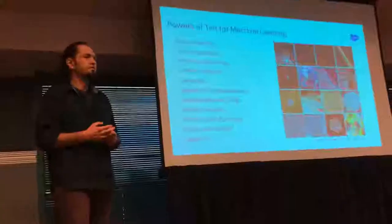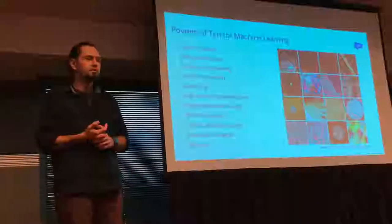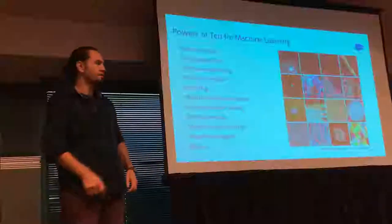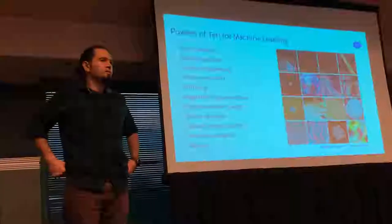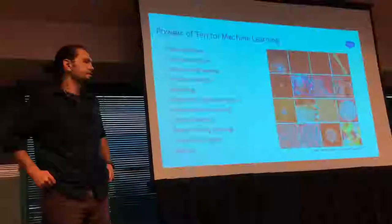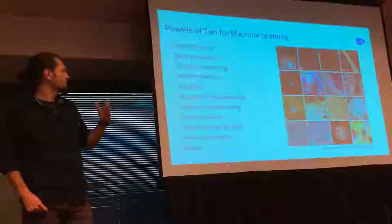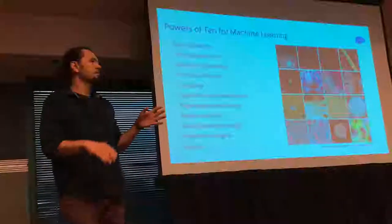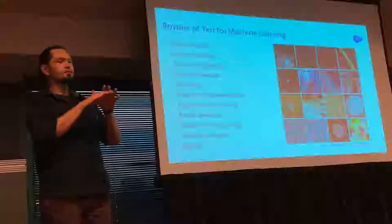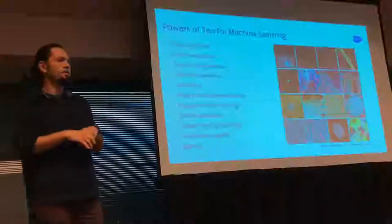Then we have to do some feature engineering. Whoever works in the machine learning field would know that feature engineering varies a lot from problem to problem, and it's actually pretty much like black magic. You don't really know what works, you do a bunch of experiments. Think about this moment as you kind of fork in time — depending on what feature engineering does, it kind of defines your path.